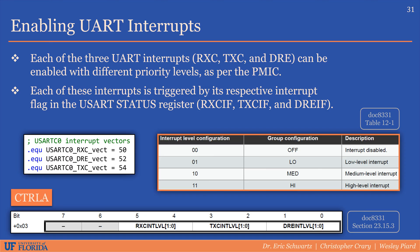Now let's get to actually enabling the UART interrupts. The Control A register contains three bitfields, each corresponding to one of the three interrupts: receive complete, transmit complete, and data register empty. Each of these bitfields contains two bits that enable and set the interrupt priority for each interrupt, following the PMIC guidelines. Each interrupt is triggered by its corresponding interrupt flag in the status register. An example of the naming convention for the interrupt vectors is shown here — this excerpt was taken from the assembly include file for the Xmega, showing the USART C0 module, with the other modules named similarly.